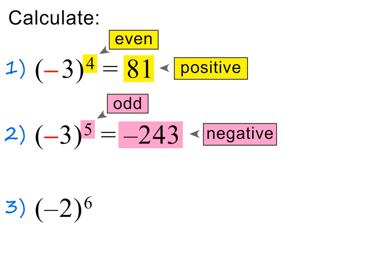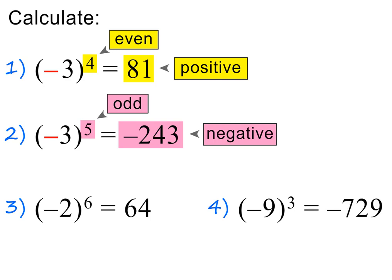In the next example, we have a negative base raised to an even exponent, and because we have an even exponent the answer will be positive. In the next example, we have a negative base raised to an odd exponent, and because we have an odd exponent the answer will be negative. Please pause to check my working.